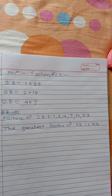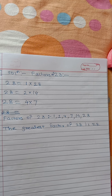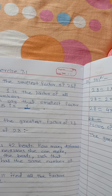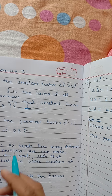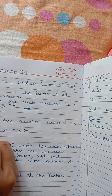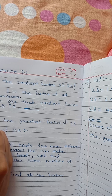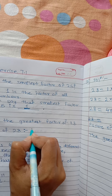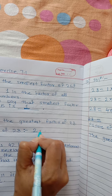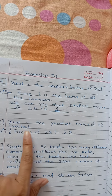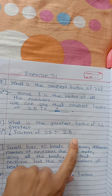And the smallest factor of any number will be 1. So for question number 10, we can write directly: the greatest factor of 28 is 28.